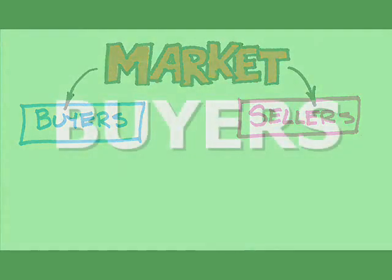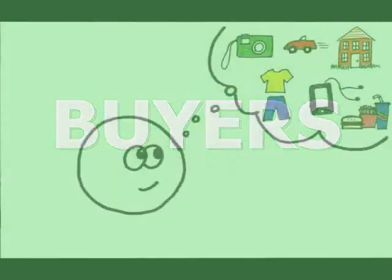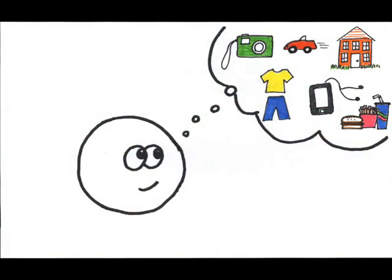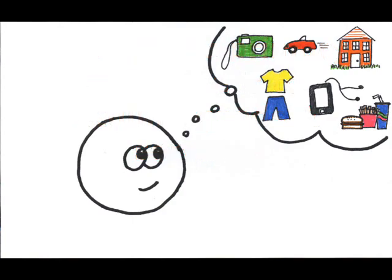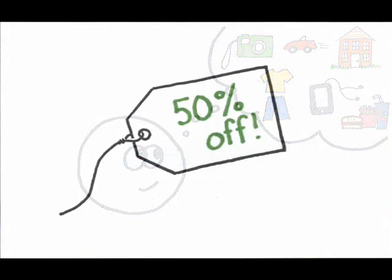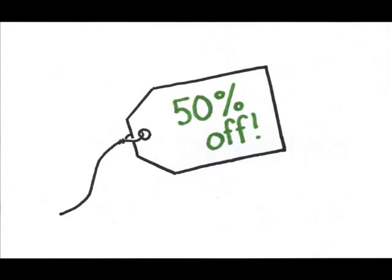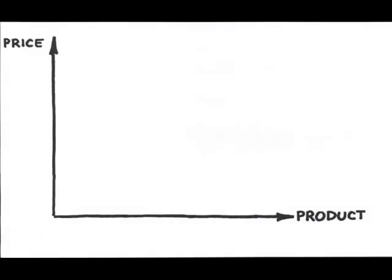Why does a buyer enter into a market? First and foremost, the buyer's primary objective is to acquire goods and services. Secondarily, the buyer wants to get those goods and services at the best possible price—best to the buyer, meaning the lowest. There's going to be a relationship between the product and the price.